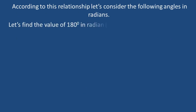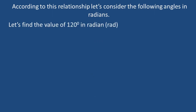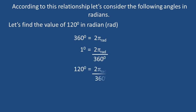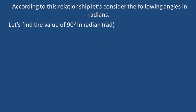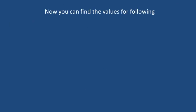According to this relationship, let us consider the following angles in radians. 360 degrees equals 2π radian, so 1 degree equals 2π/360. Therefore, 180 degrees equals π radian. For 120 degrees: 120 × 2π/360 equals 2π/3 radian. For 90 degrees: 90 × 2π/360 equals π/2 radian. Now you can find the values for the following degrees in radian as above.